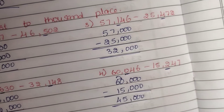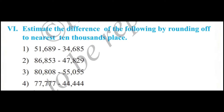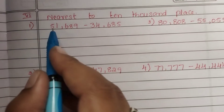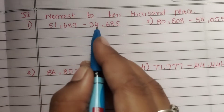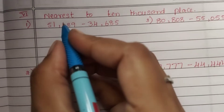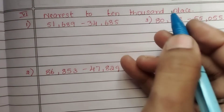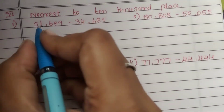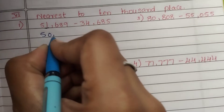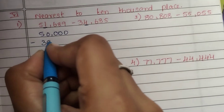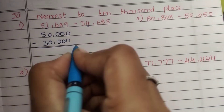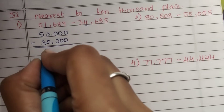Sixth main: estimate the difference of the following by rounding off to nearest ten thousands place. Sixth main, first question: 51,689 minus 34,685. Round to 10,000s — digit 1 is less than 5, so 50,000. Digit 4 is less than 5, so 30,000. 5 minus 3 is 2 — answer is 20,000.